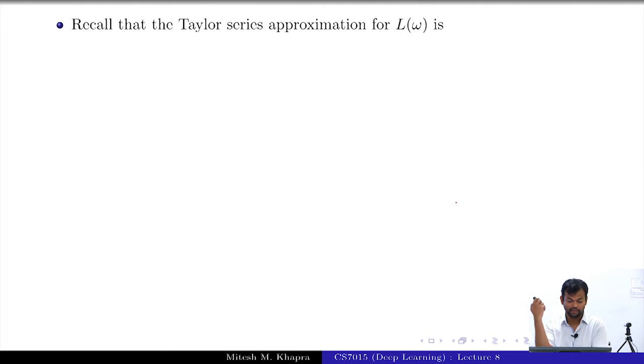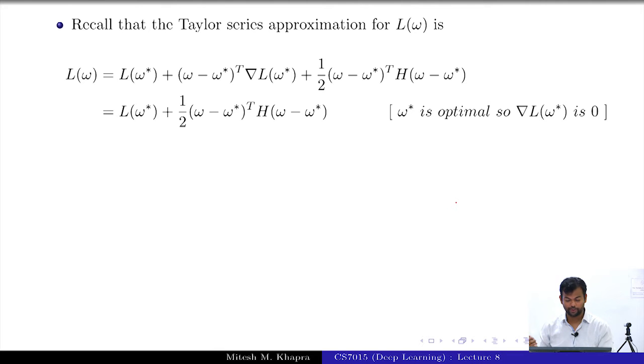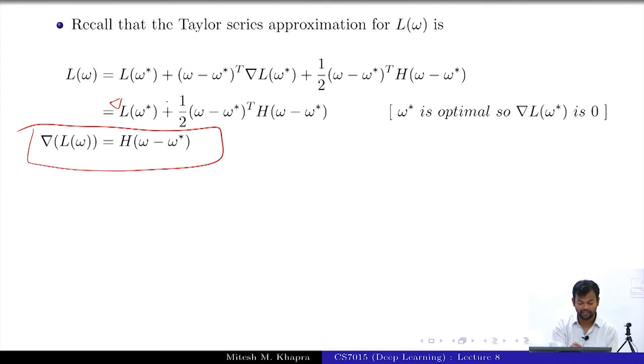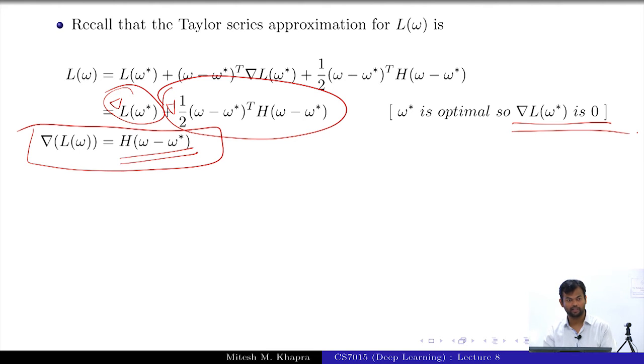We will now see a mathematical analysis of this. Recall that a Taylor series approximation for L(w) is the following, the same thing which I wrote many slides back. Everyone remembers this? And now again I am going to do the same thing that if I know the optimal w* then the gradient at that point is going to be 0, so this term disappears. And now if I take the derivative this is what will remain, this is exactly what we did earlier also. We will have derivative of this and derivative of this.